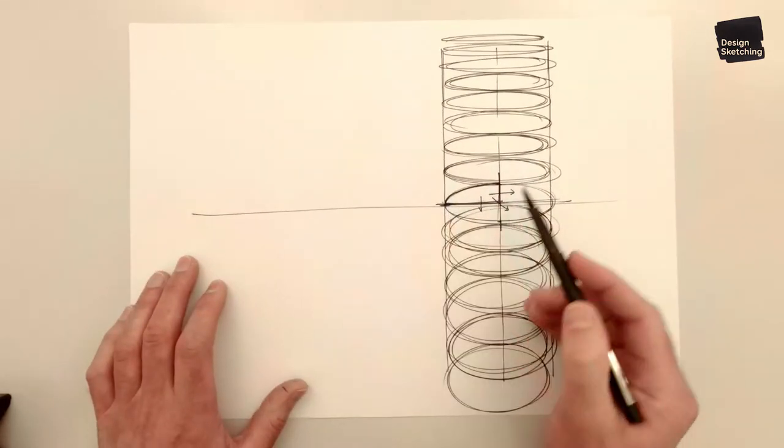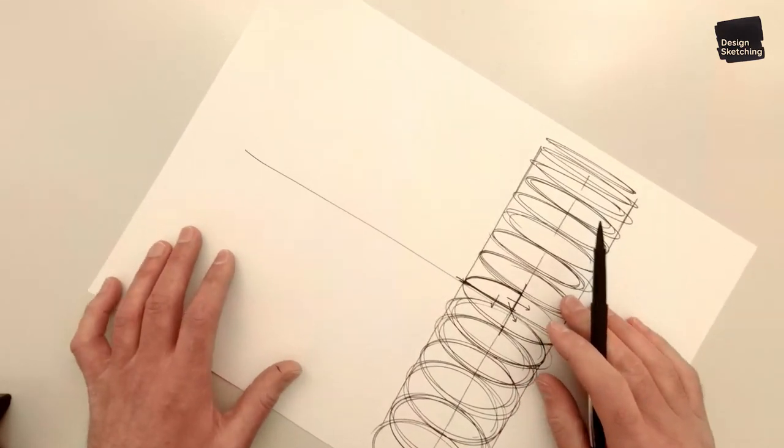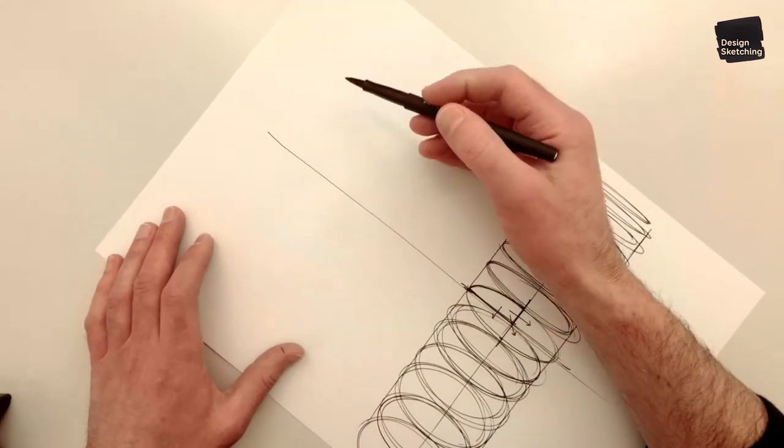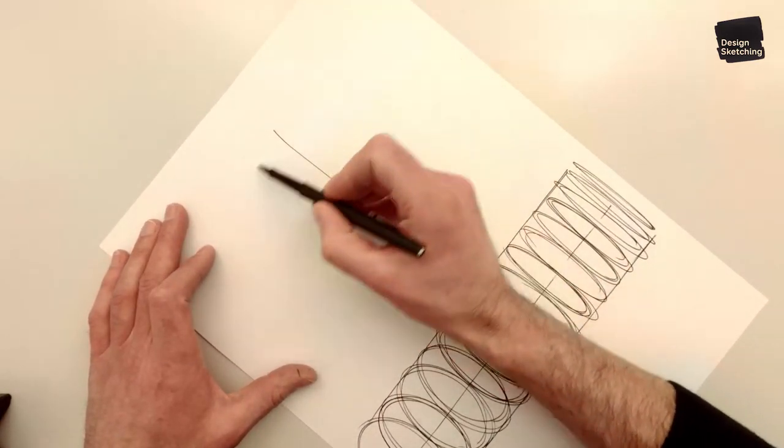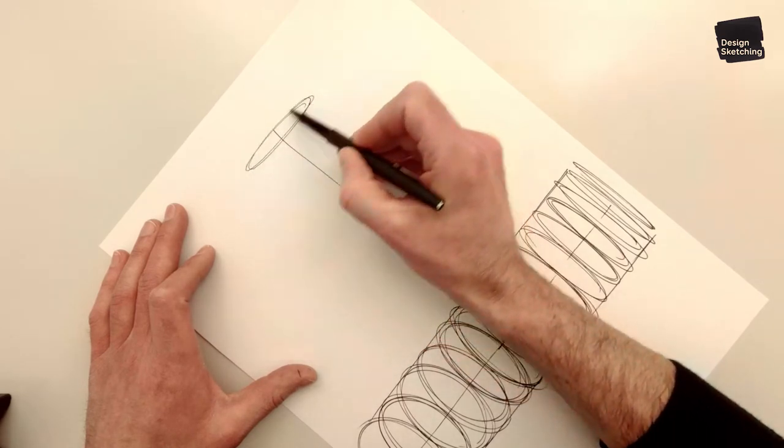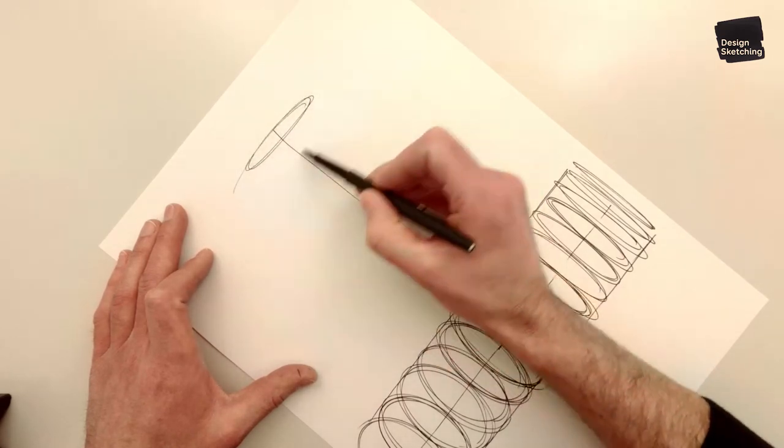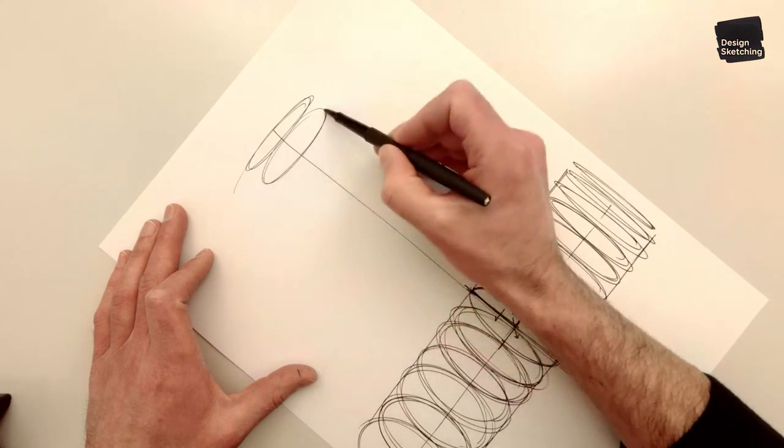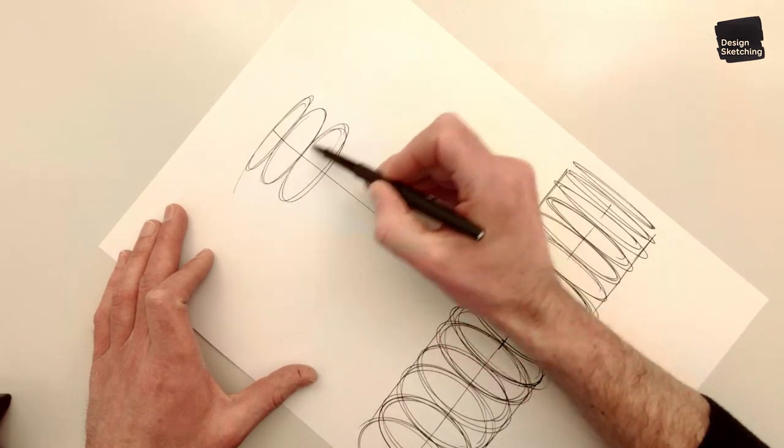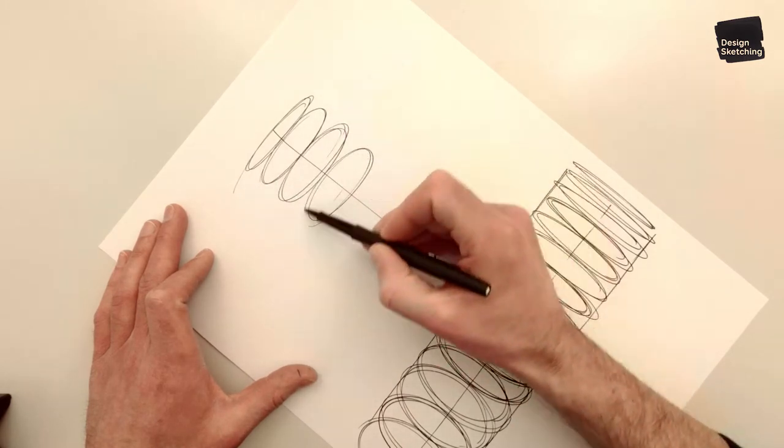Next rotate the page a bit to the left and try and do the same in this direction. So here's a narrow ellipse and we're going to make them wider as we move to the right of the page.